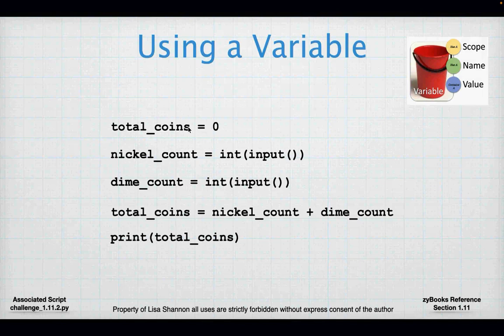Let's read through this. I have a variable called total_coins — I know it's a variable because it is on the left-hand side of a single equal sign, and on the right-hand side is the value zero. Then I have nickel_count, which is again on the left-hand side of a single equal sign, so I know it is a variable and I am assigning some value to it.